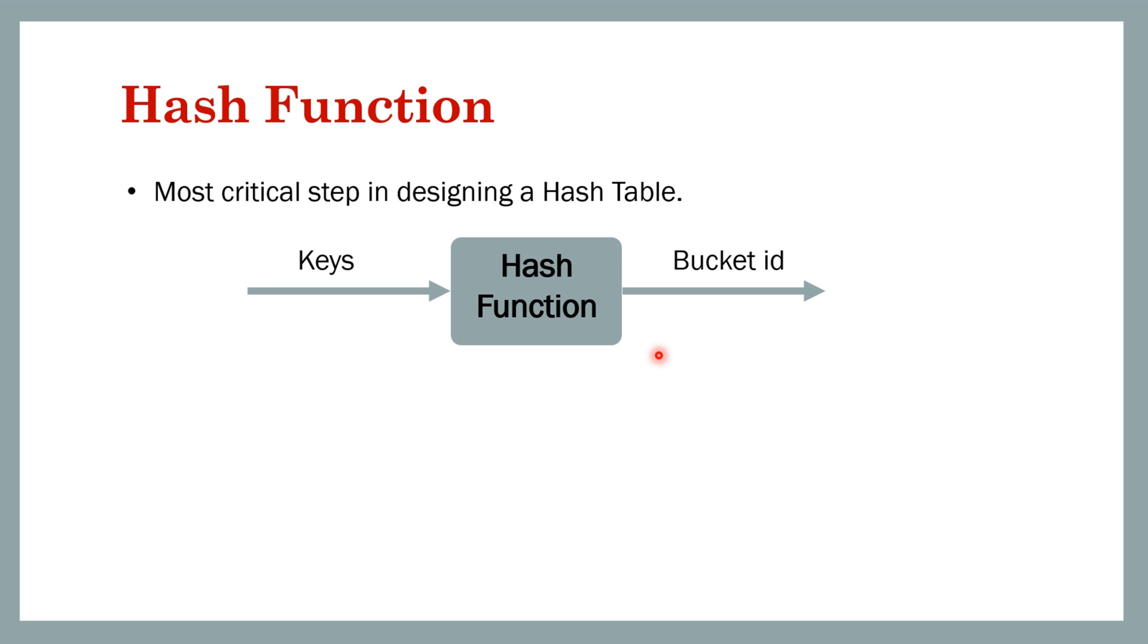This is the most critical step and also it's an open problem to design a good hash function. There is no perfect hash function that will suit all use cases and all requirements. The hash function itself will depend on multiple factors. One of the important factors is the type of data that you get, because ultimately you need some bucket ID which is some integral value, but the key cannot be integral in all cases.